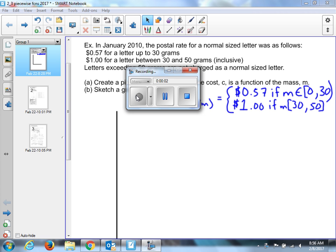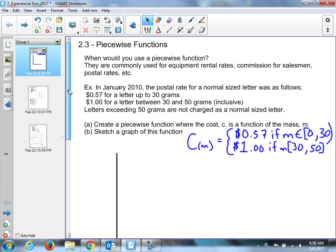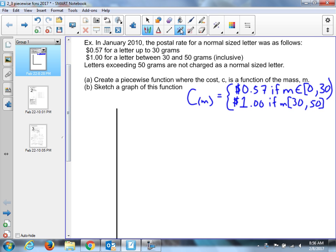Good morning, Calculus. I was sleepy and forgot to do this. Piecewise functions is what we're looking at. We're just working through an example. 57 cents for a letter up to 30 grams. So we said as a piecewise function, the answer, whatever the mass is, the cost, is 0.57 dollars if the mass is zero up to but not including 30 grams. This statement we said it's just equal to a dollar if the mass is 30 inclusive to 50.